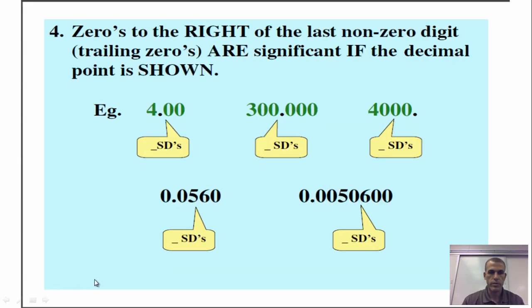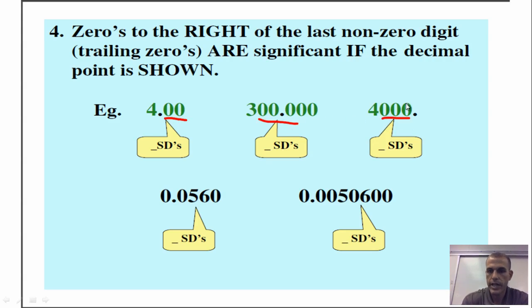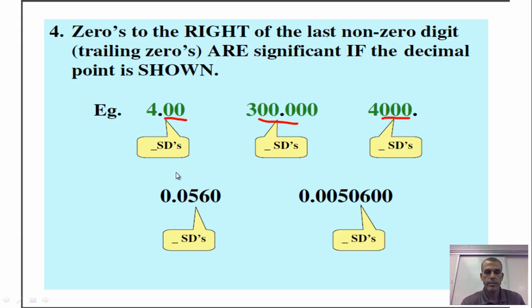Rule number four: zeros to the right of the last non-zero digit — what we refer to as trailing zeros — are significant if the decimal point is shown. These are trailing zeros, and as long as the decimal point is shown in these examples, those are all going to be significant digits. Take a minute and see if you can figure out the number of significant digits for the next set, written a little differently.